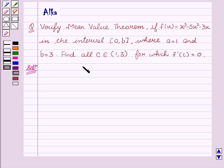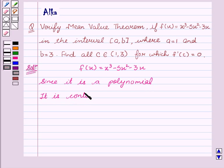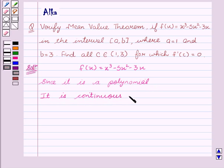We are given f(x) = x³ - 5x² - 3x. Now being a polynomial function, it is continuous in the closed interval [1,3].